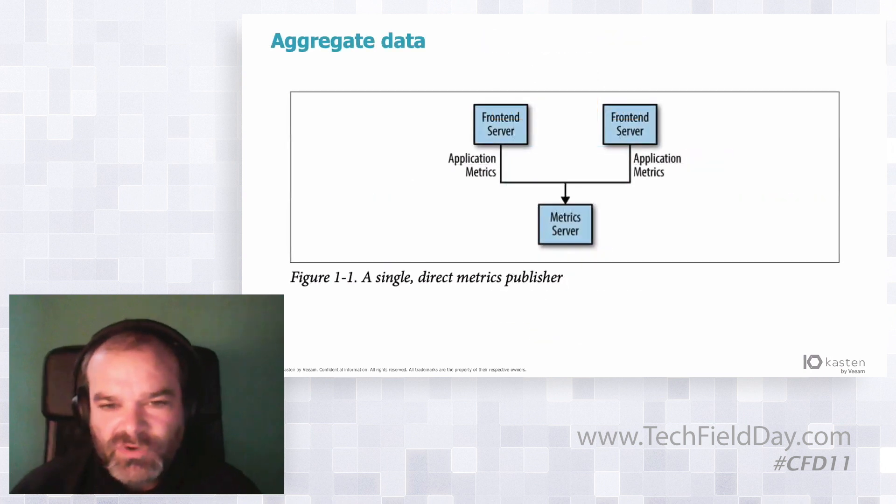Let's say that you need to aggregate some data in a metric server. Then you have two applications, the front end servers, two different front end servers, and you need to push on data. This model is very simple and it works perfectly fine and you don't need to reinvent the wheel. That's absolutely fine. You can work with that.